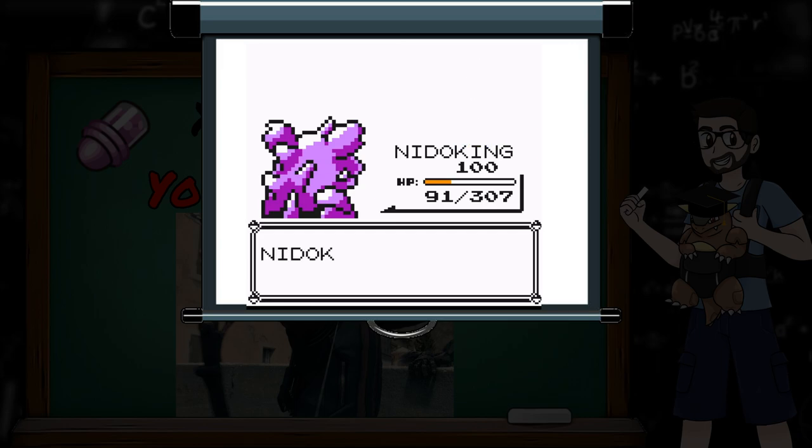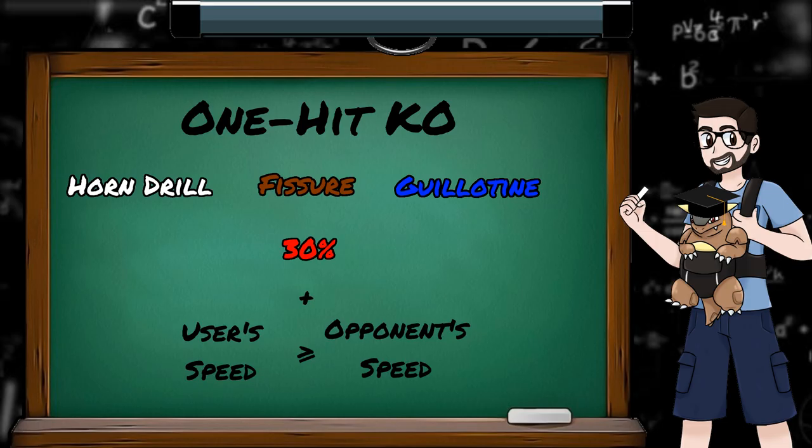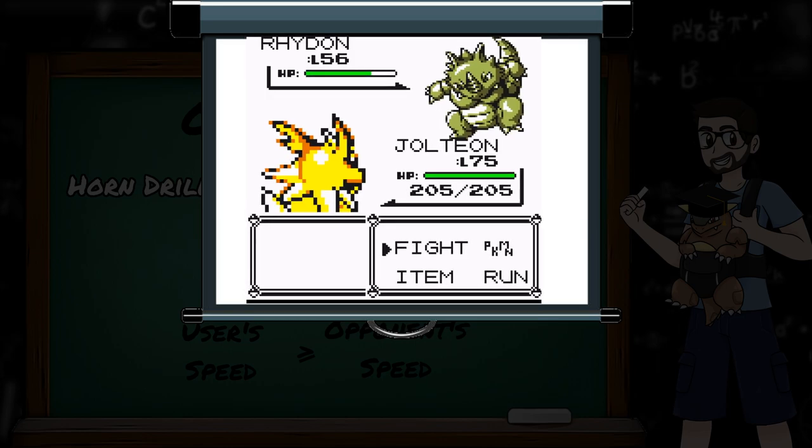And speaking of one hit KO moves, they each have 30% accuracy, when we aren't cheesing the game with broken items. But they are also met with an additional accuracy condition. They will only hit if the user's current speed is greater than or equal to the opponent's current speed. So have no fear Jolteon, that Rhydon's never going to fissure you.